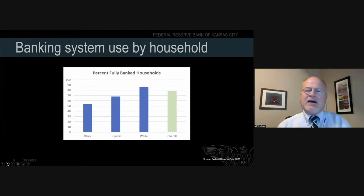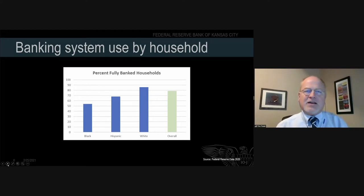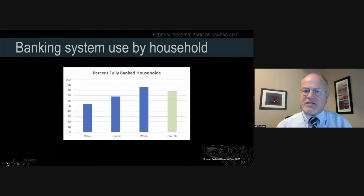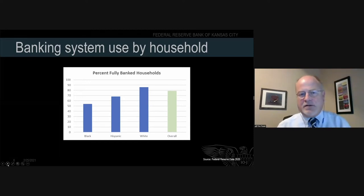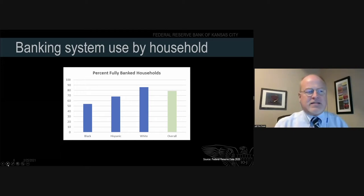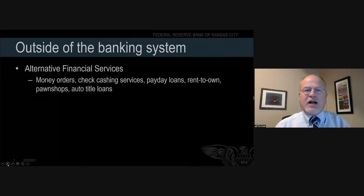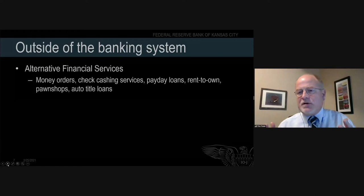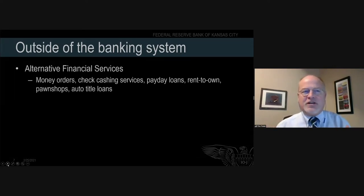This chart from Federal Reserve data shows the percent of households that are fully banked — meaning they have both a savings account and a checking account. If you're not fully banked, you're either unbanked or underbanked. An underbanked household typically has a checking account to pay bills but no savings and no relationship with a bank for borrowing. Falling outside that puts you vulnerable to alternative financial services providers.